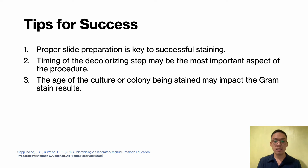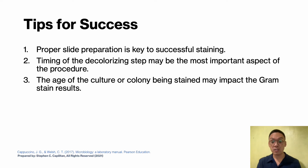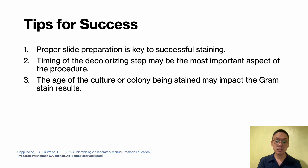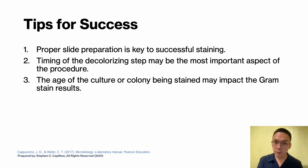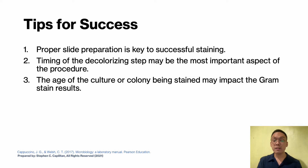Third, the age of the culture being stained may impact gram stain results. The best gram stain preparations are made with fresh cultures not more than 24 hours of age. As cultures age, especially gram positive cells, organisms tend to lose their ability to retain the primary stain and may appear gram variable — some cells appearing purple while others appear pink.